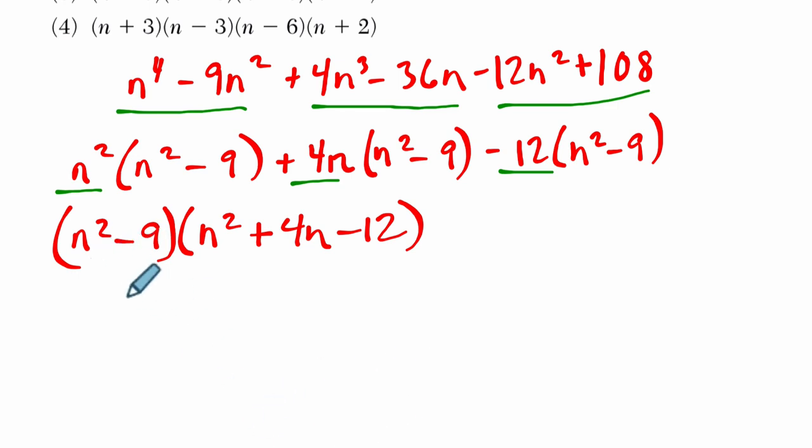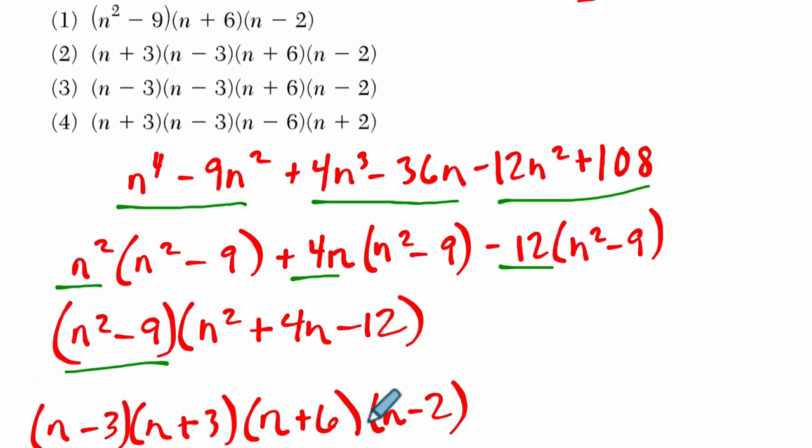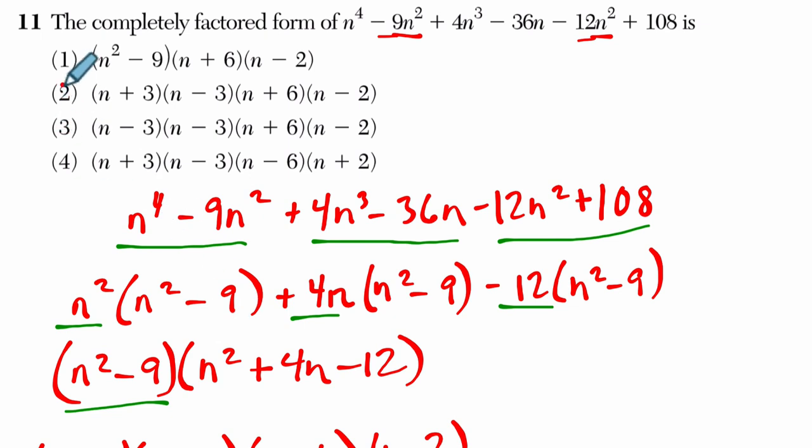So in this part, we have n-squared minus 9. That factors to n minus 3 times n plus 3. And then we have a trinomial that factors nicely. We need two factors that multiply to negative 12 but add to positive 4. So we can multiply n plus 6 by n minus 2. And that gets us choice 2 here.